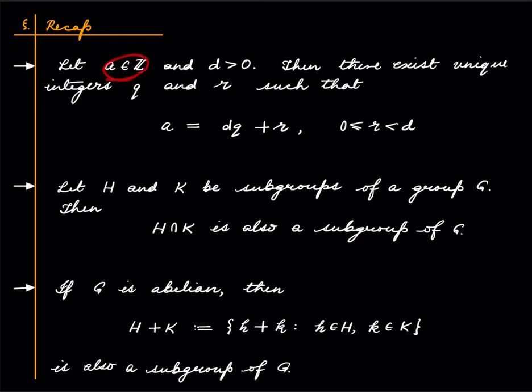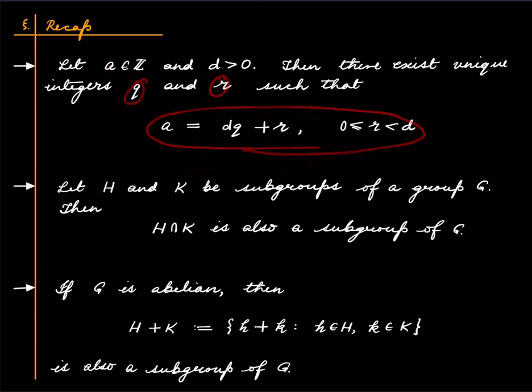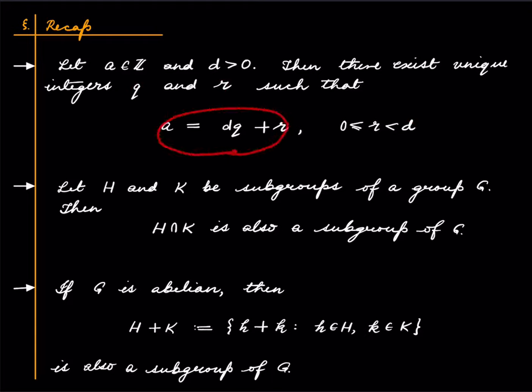Fix some integer a and some positive integer d. The division with remainder theorem says that there exist unique integers q and r satisfying: a = dq + r, meaning divisor into quotient plus remainder, where the remainder r lies in the range 0 ≤ r < d.